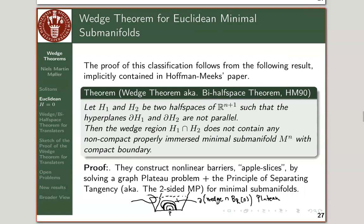If your minimal surface sits inside the wedge, you keep growing the ball radius until the apple slice first touches the surface. This violates the two-sided maximum principle for minimal submanifolds — that is the argument in brief.